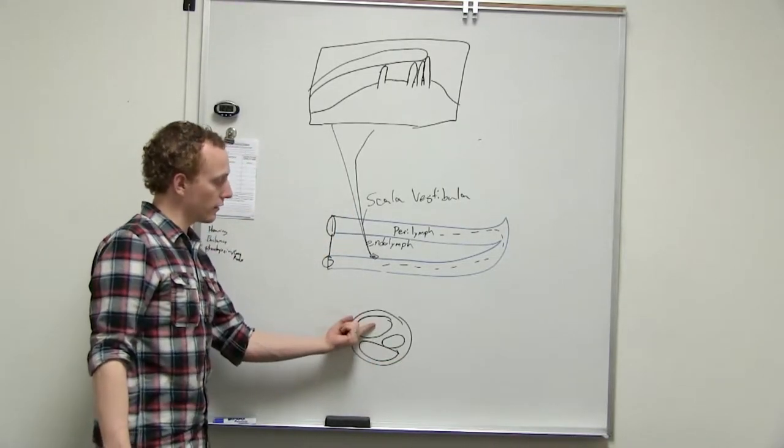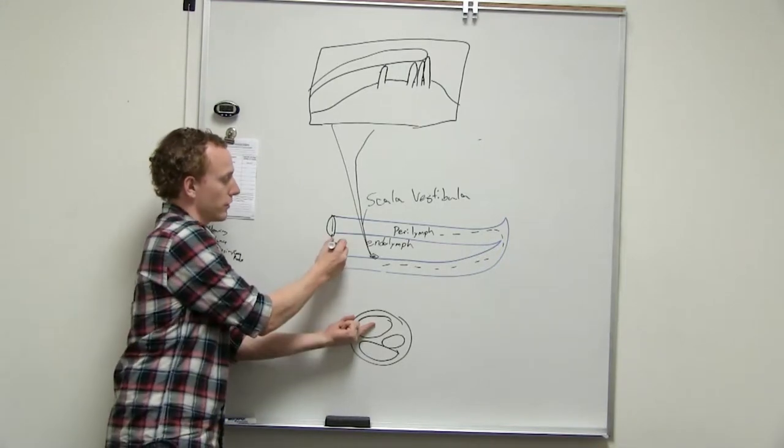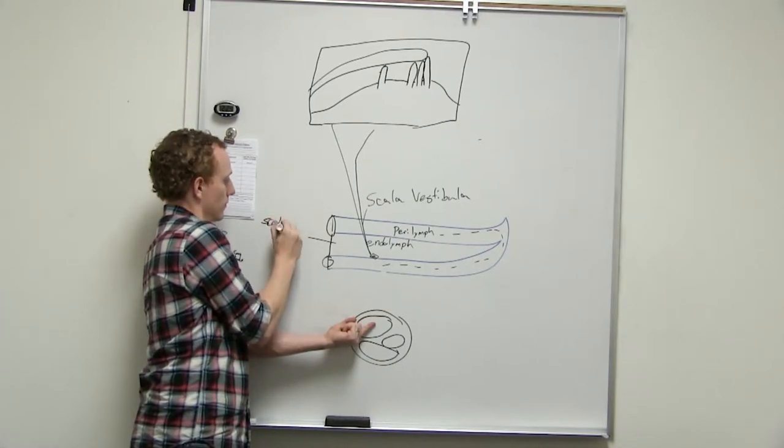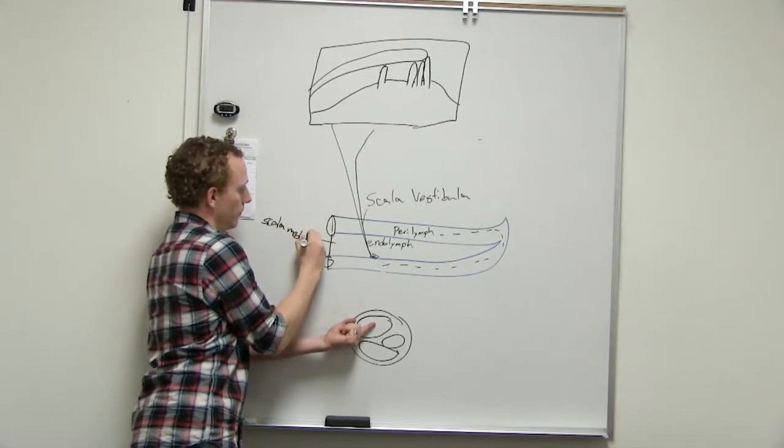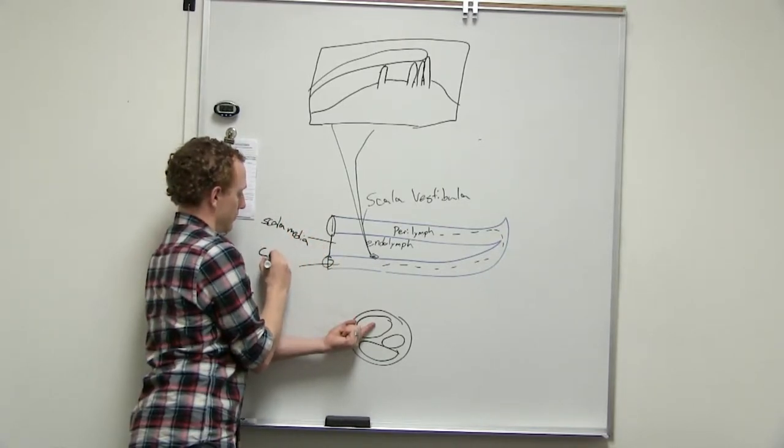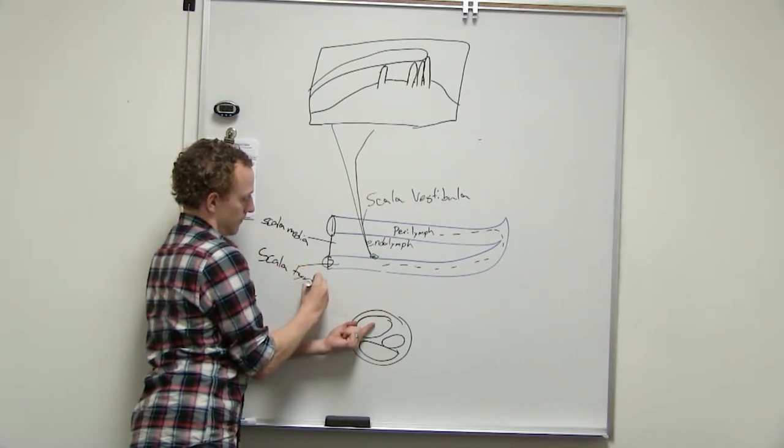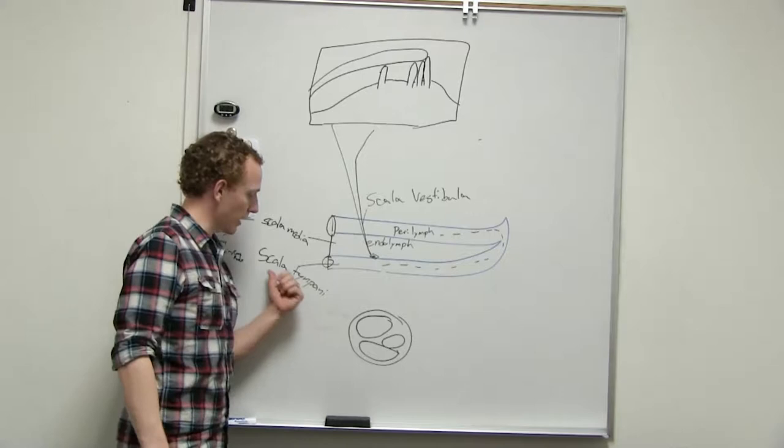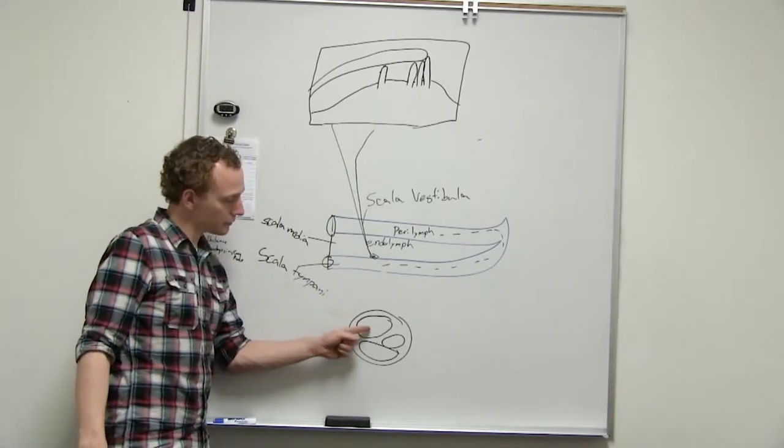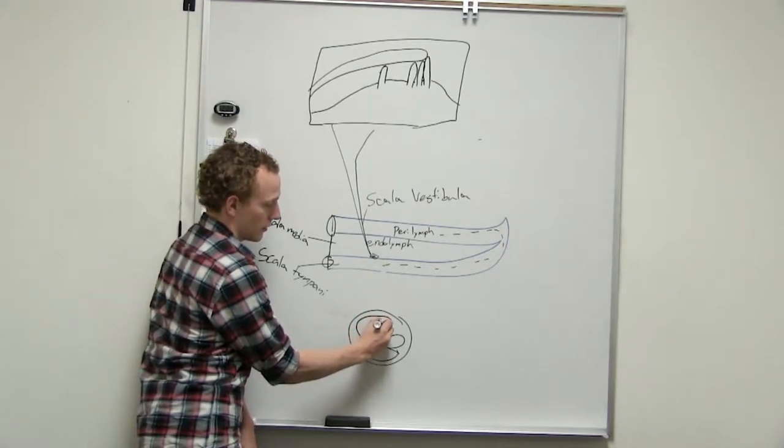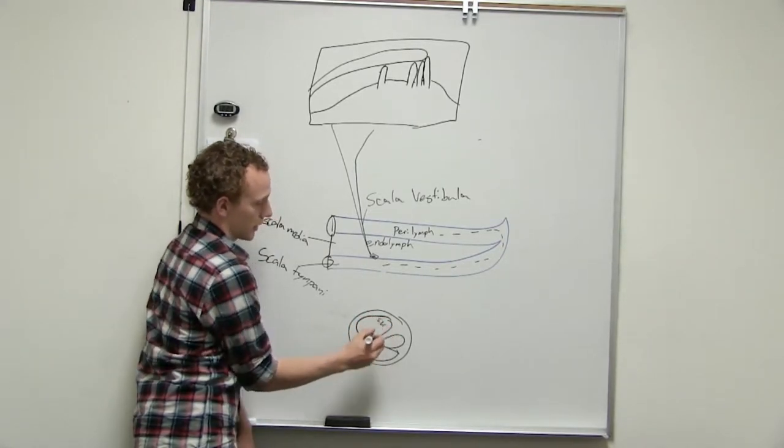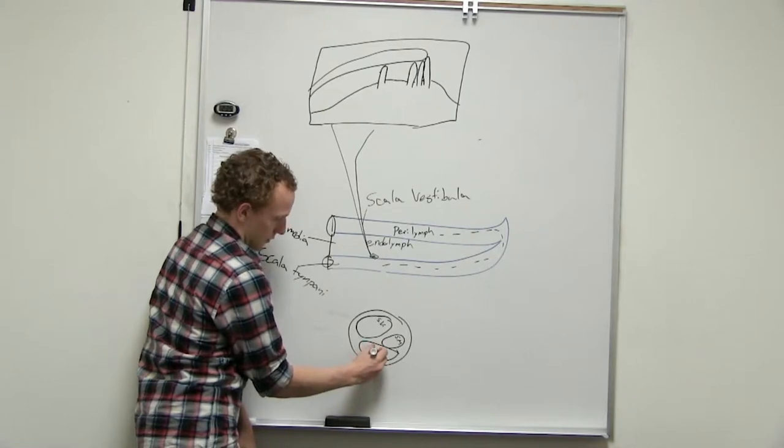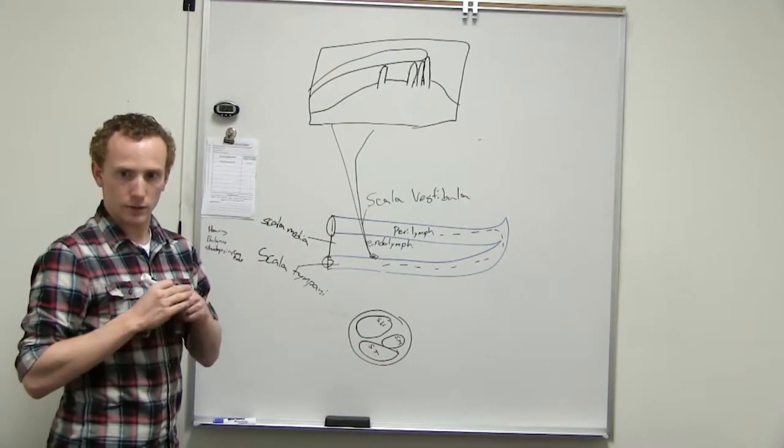So this is the scala vestibula. Random thing, we didn't finish labeling. This is the scala what? Scala media. This is making more sense now. And then this guy? Scala tympani. Someone plays the timpani, right? So it's the scala tympani. So right here, that's our scala vestibula. This is our scala media. This is our scala tympani.